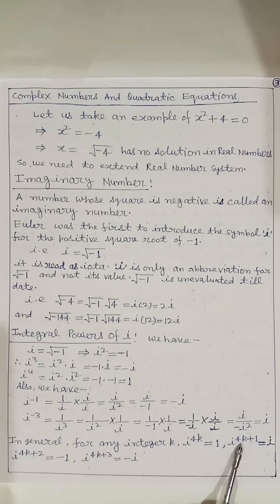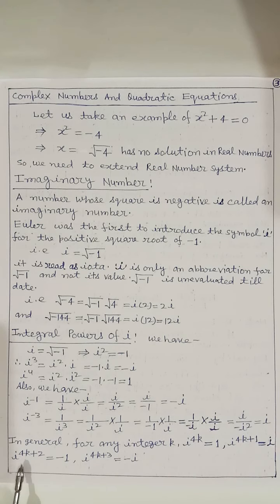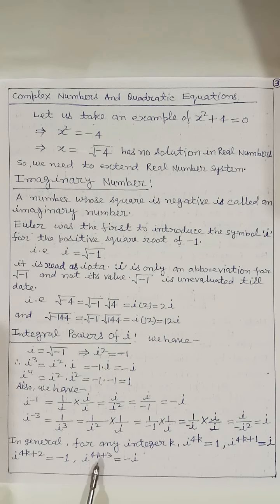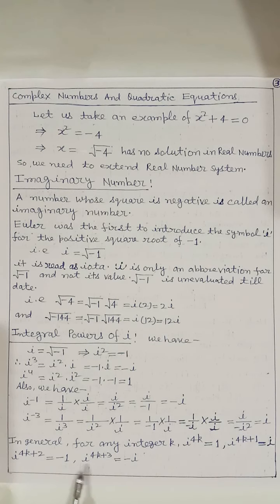Also, i⁻¹ = 1/i = i/i² = −i. Using this pattern, in general for any integer k: i^(4k) = 1; i^(4k+1) = i; i^(4k+2) = −1; and i^(4k+3) = −i.